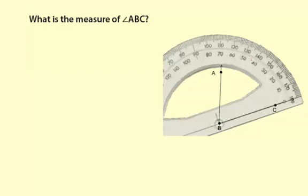Here's how you line it up. Every protractor has a point, usually marked by a circle with crosshairs, where you need to line that up with a vertex. In this case the vertex is B. Notice how this point on the protractor is lined up with vertex B.